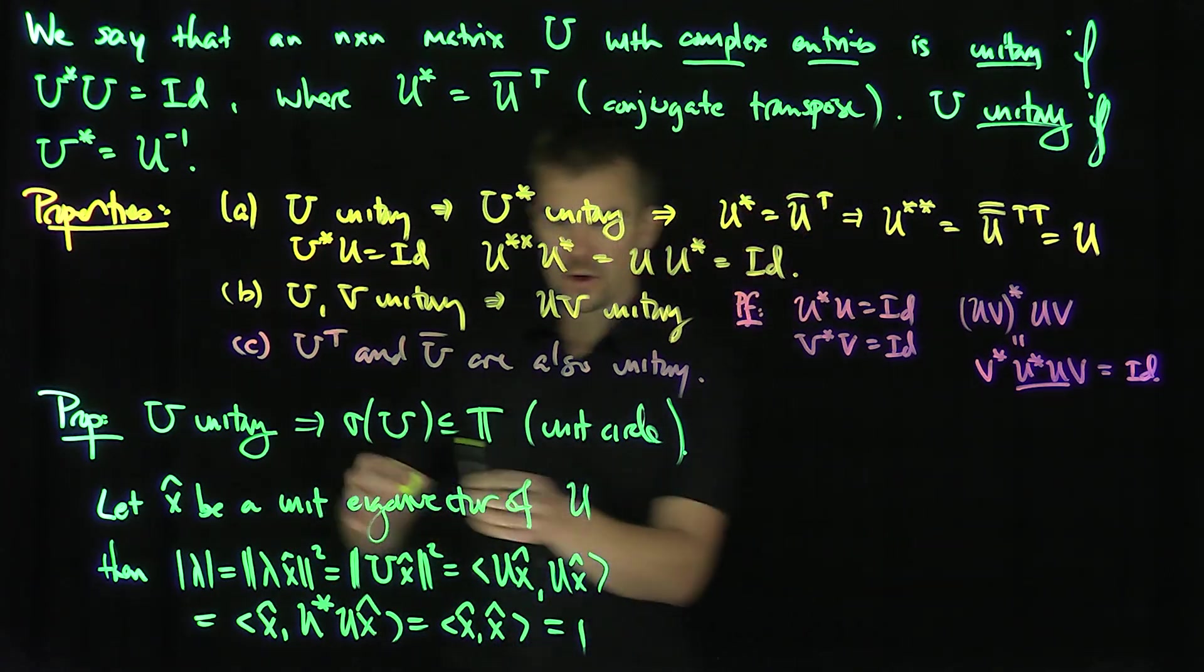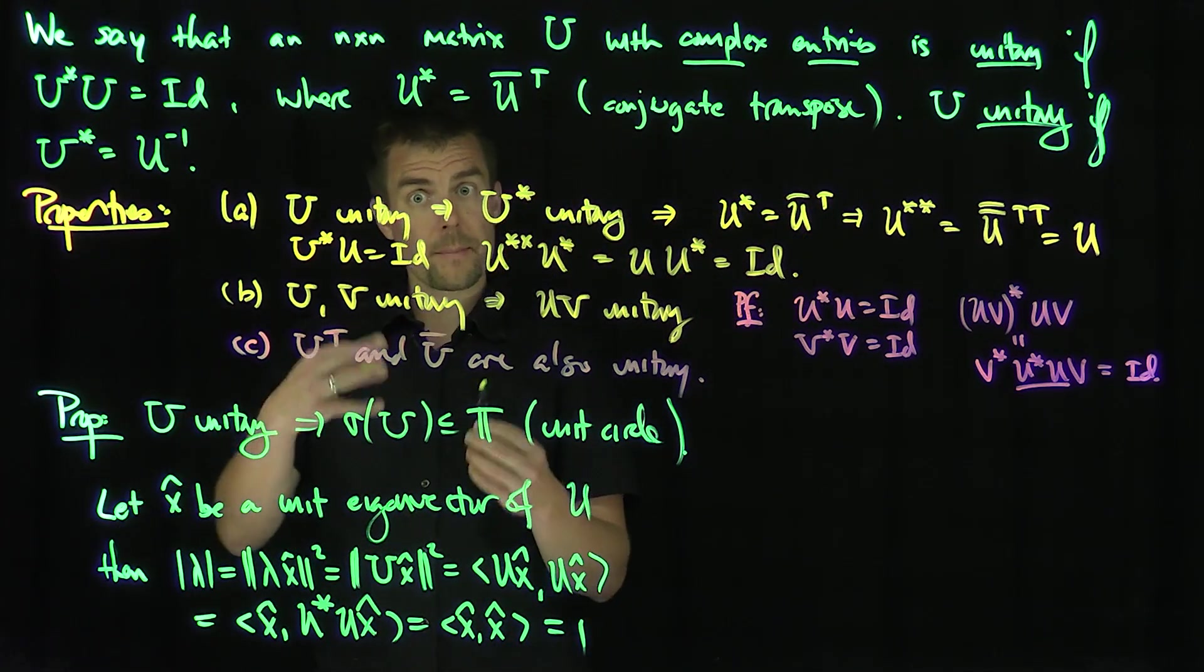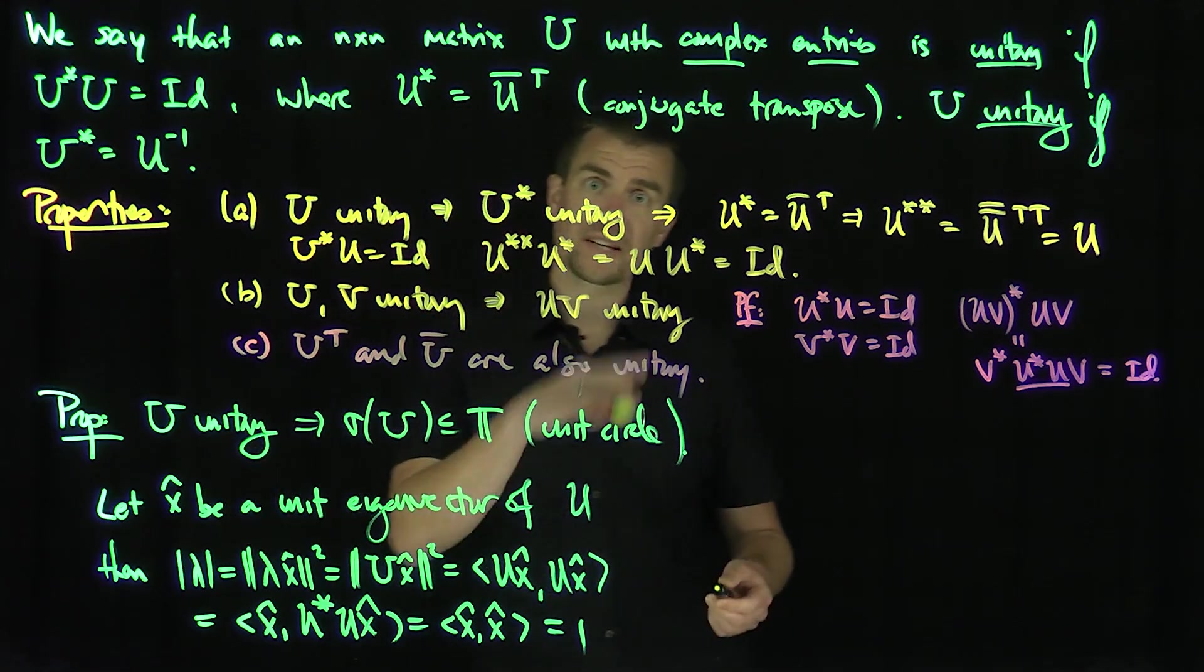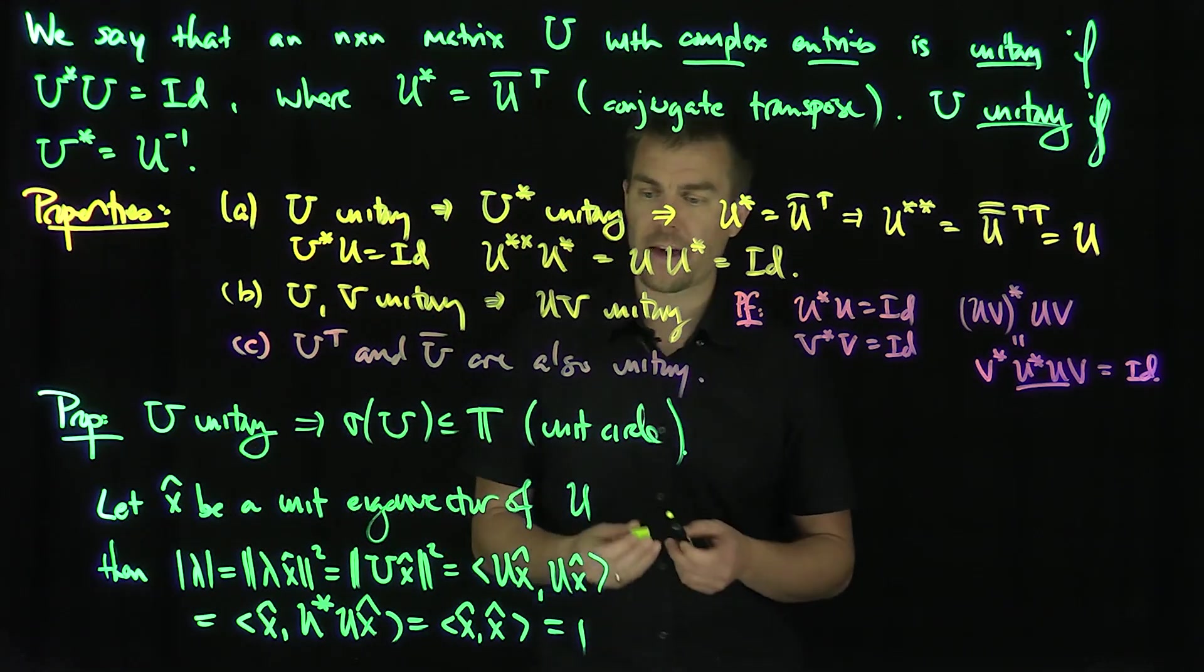So in other words, the spectrum of a unitary operator is always on the unit circle, so we have a purely imaginary eigenvalue. So every eigenvalue looks like e to the i theta for some value of theta.